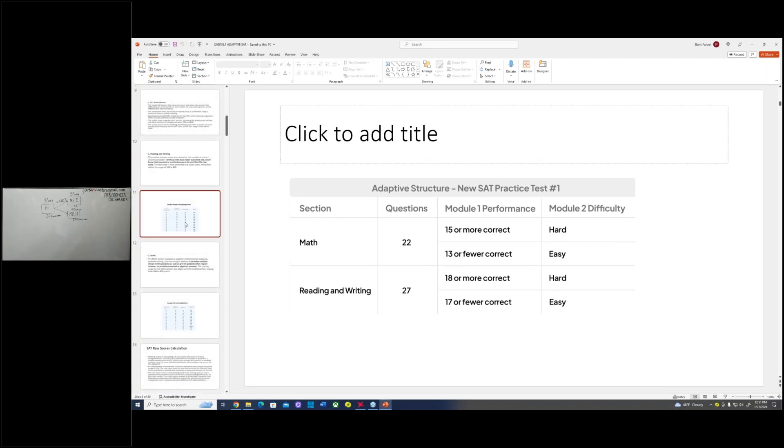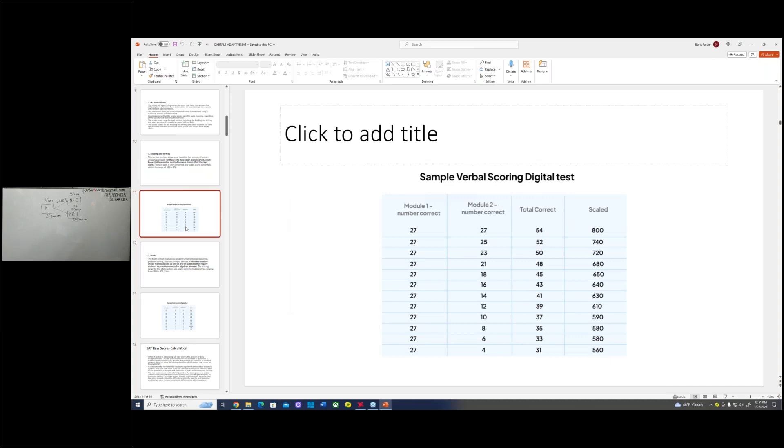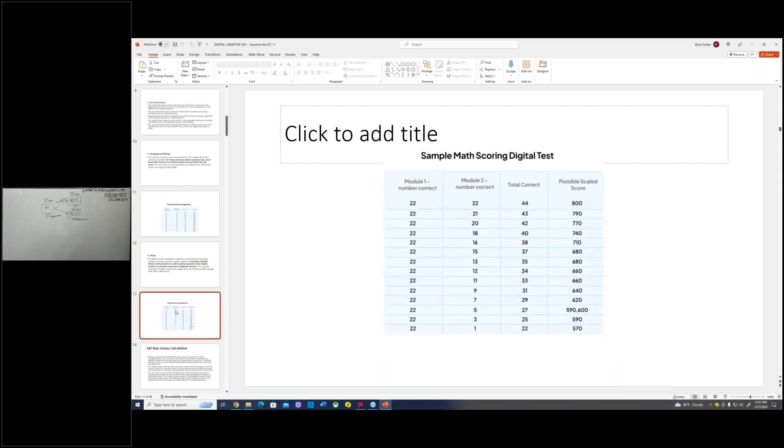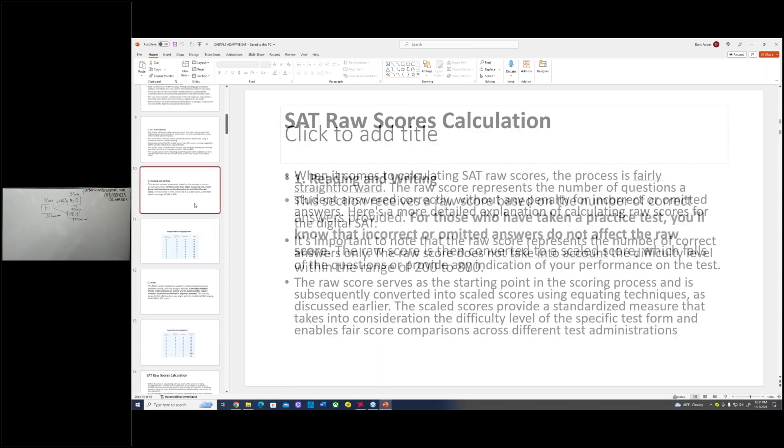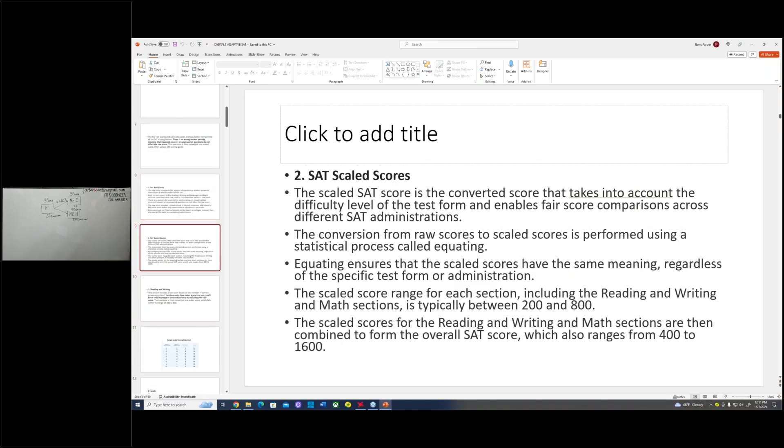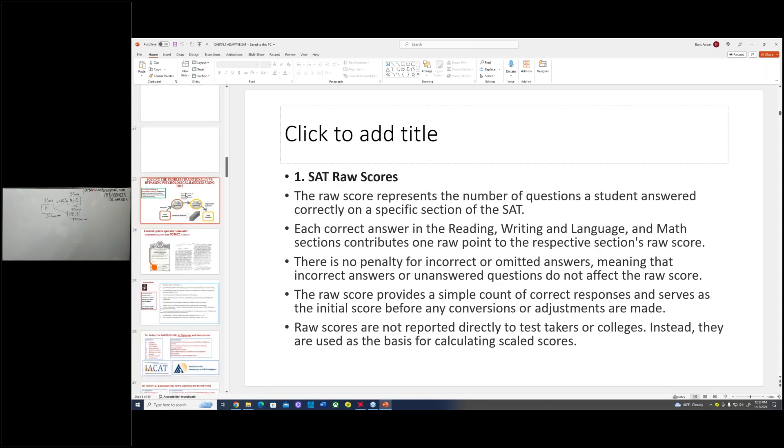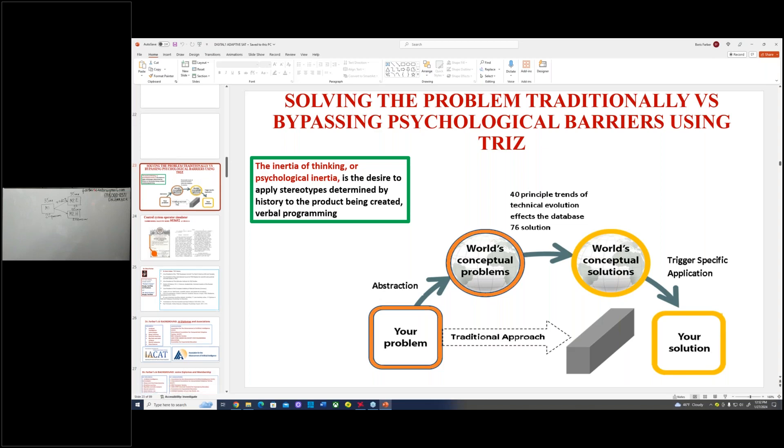Some students ask what is the best strategy? Some students think that if they fail the first part, the second part would be easy. It's true. But it's not a good idea, because on the overall test, to get a perfect score, you have to perform the best on both parts. Some deliberately make a smart move—they get low score in the first part to get the easy part. Yes, but your score would be low. We have two kinds of scores here on this test, scale score. We teach you how to overcome psychological inertia.